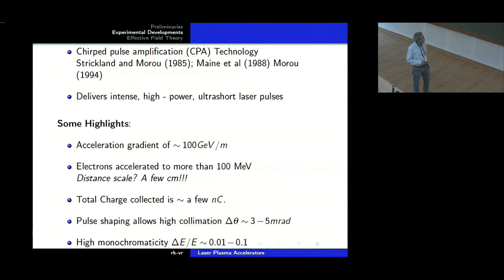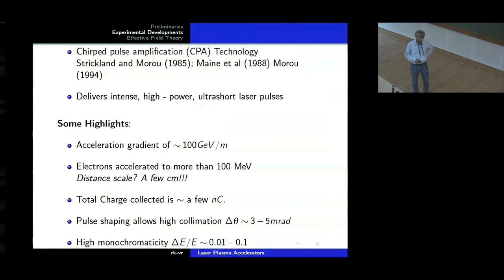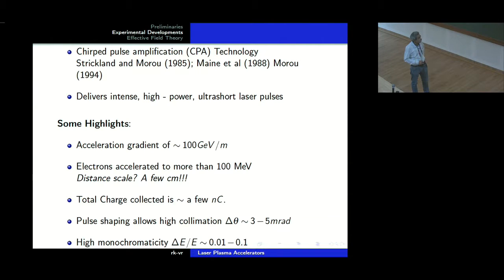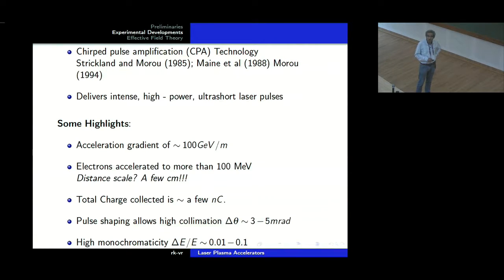Total charge collected is a few nano coulombs, so it is not too small. Pulse shaping allows high collimation of about 3 to 5 milliradians. There is high monochromaticity — the energy delta E by E is of the order of 0.01 to 0.1. I believe that collimation and intensity are much better in conventional accelerators, so at this stage we should not immediately start dreaming of using this straightaway to build a high energy physics accelerator — that would require much more work.